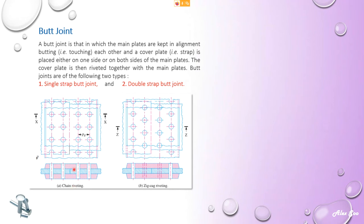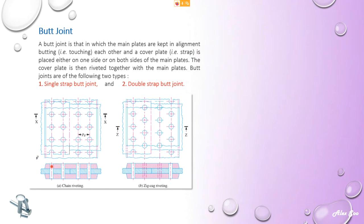The plates shaded in pink are called the cover plates or strap plates. This example shows double cover or double strap. This is also a chain riveting arrangement. This is an example of zigzag riveting for a butt joint. Remember, a butt joint can be single cover or double cover. Both examples here are double cover. If it is single cover, that means you have a single plate on top or a single plate at the bottom — either on top or bottom. For double cover, you have plates on top and bottom at the same time.